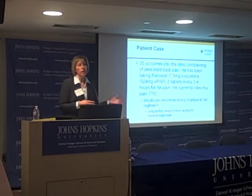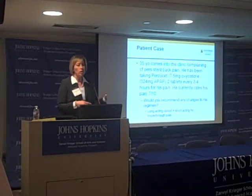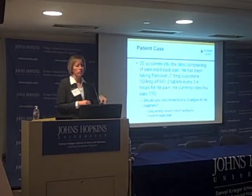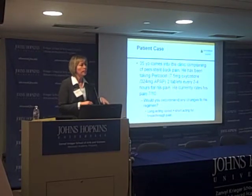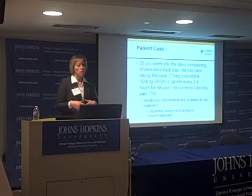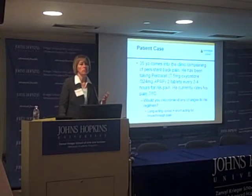This is a very common scenario: a young patient seen in clinic with persistent back pain, currently taking Percocet — an oxycodone-Tylenol preparation — needing to take two tablets every two to four hours for pain, but still rating his pain as 7 out of 10, which would denote severe pain. So what recommendations or how would we change this regimen?